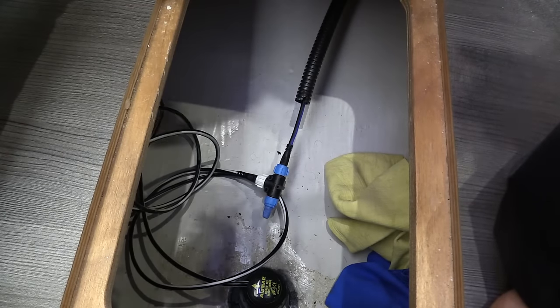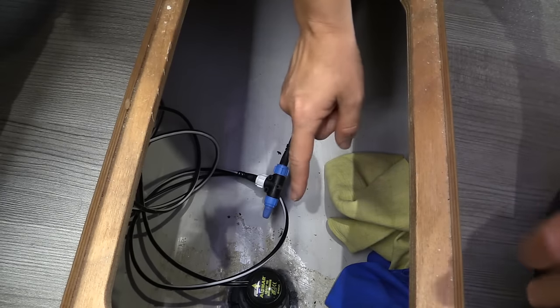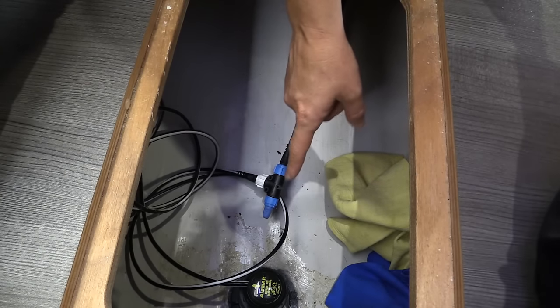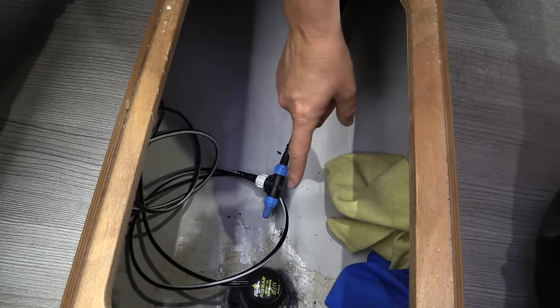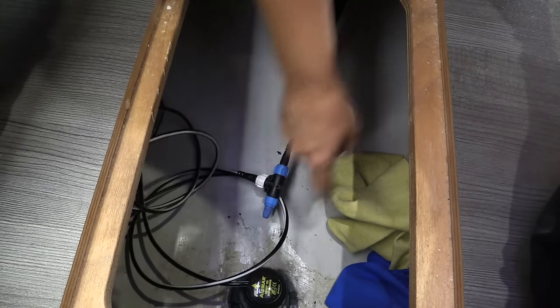Here we have our transducer. It is a through-hole transducer. So there is a hole, H-O-L-E, in the hull, H-U-L-L, of our boat. This is the part right here that I need to pull out and clean.